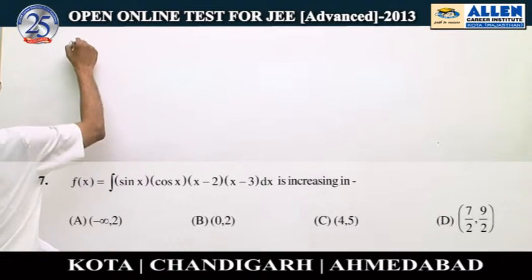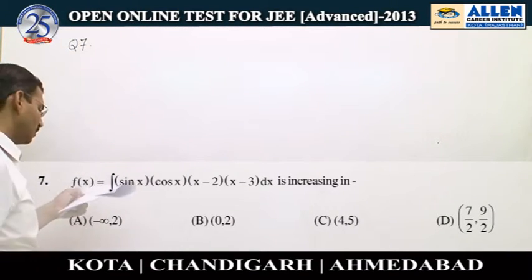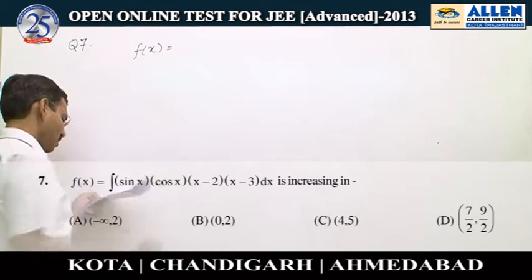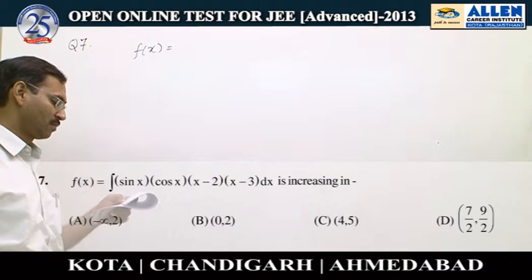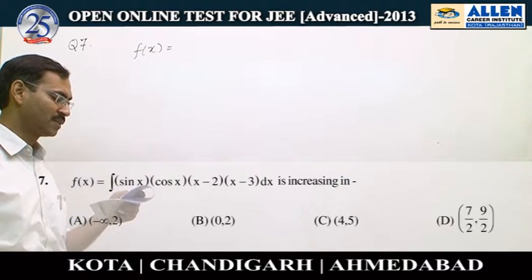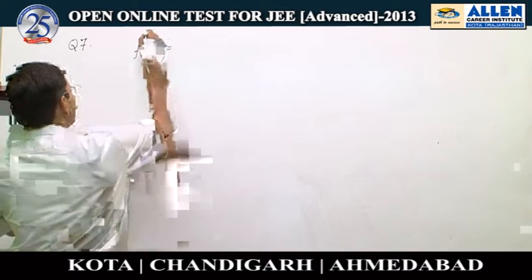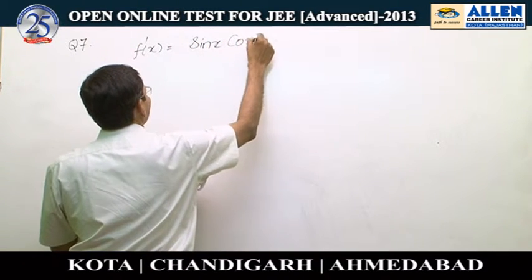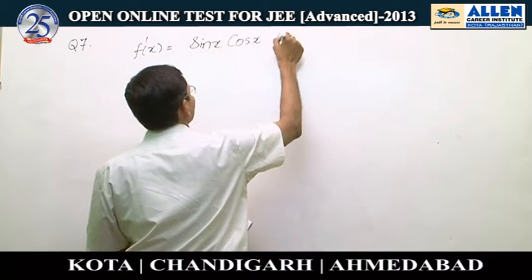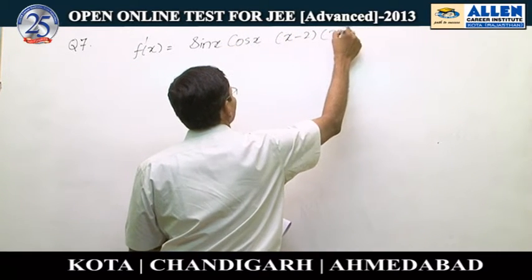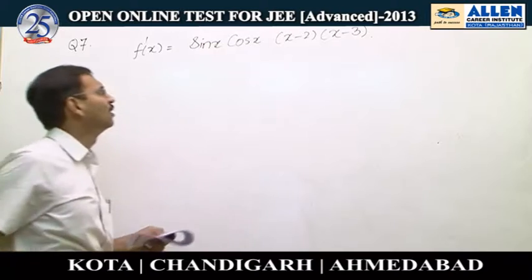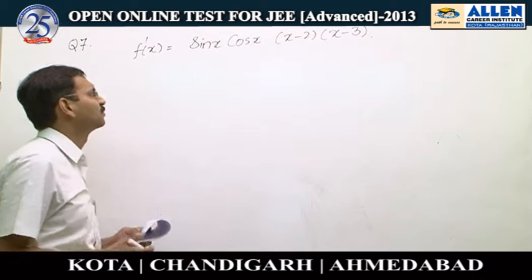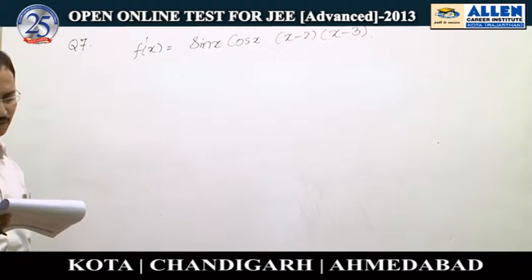Question number 7. We will differentiate the function to get the interval — the right interval from the options — in which the function is increasing. f'(x) = sin(x)·cos(x)·(x - 2)·(x - 3).